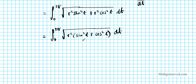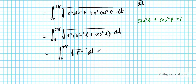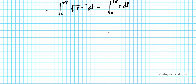Using the Pythagorean identity, sine squared t plus cosine squared t equals 1. So the integral simplifies to the integral from 0 to 2 pi of the square root of r squared, dt, which becomes the integral from 0 to 2 pi of r, dt. Since r is a constant, I can factor it out: r multiplied by the integral from 0 to 2 pi of 1, dt.